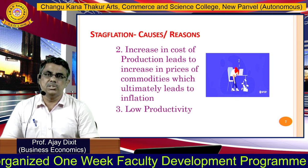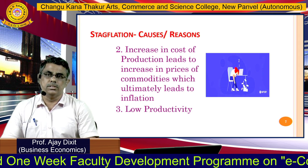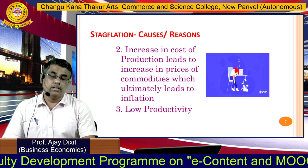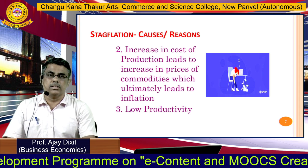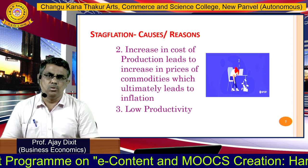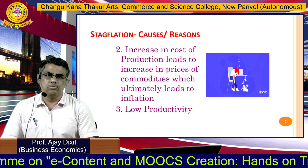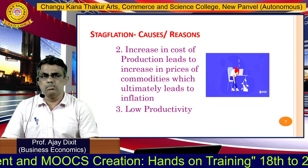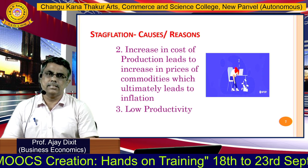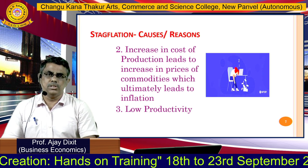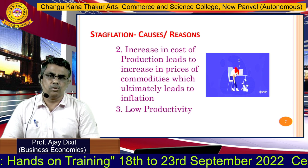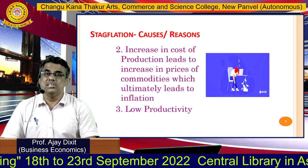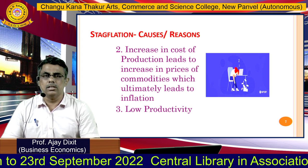The second cause is increasing cost of production, which leads to increasing prices of commodities and ultimately inflation. The third cause is low productivity — if people are not working up to their potential, optimum production is not possible. As a result, cost of production increases and prices of commodities rise, but the output of the company — and the country — is lower.